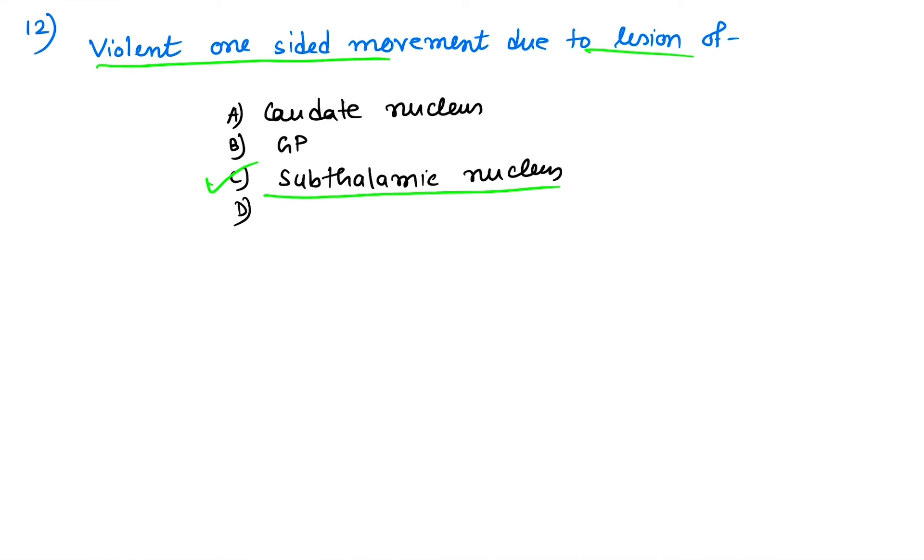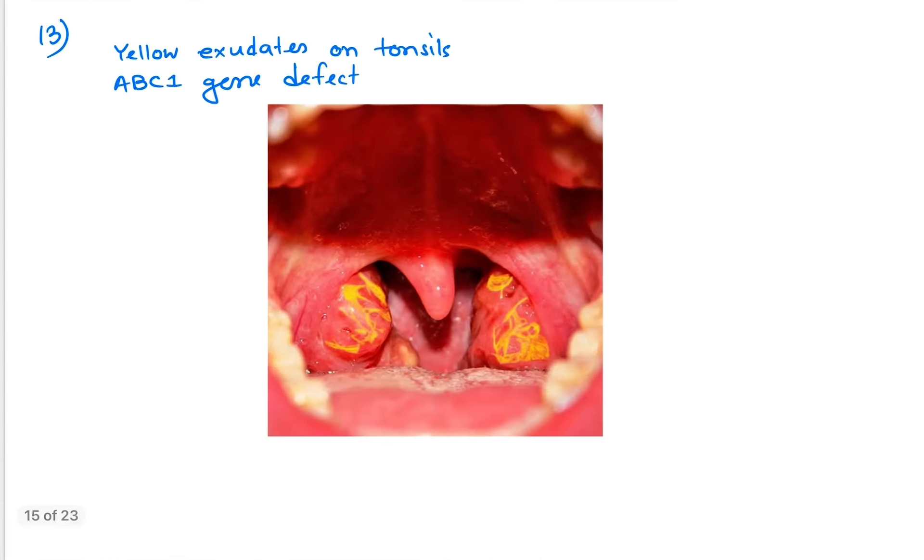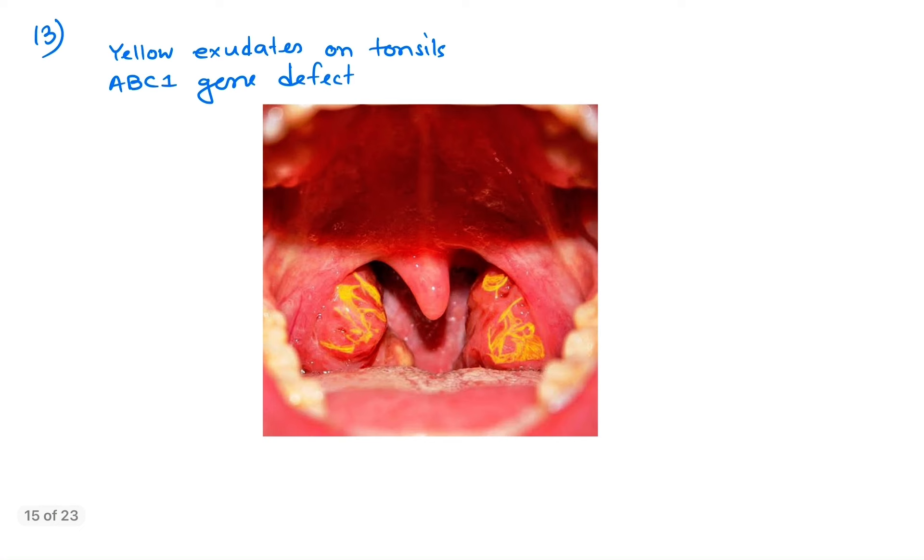Question number 30 is an image-based question about yellow exudates on tonsil. This is a typical image and the gene affected was given as ABC1 gene defect, so this is Tangier disease.